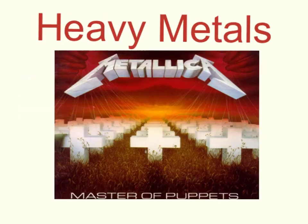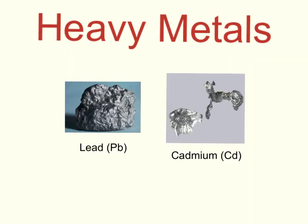Now, heavy metals. We have two examples here: lead and cadmium. These metals are very dangerous if they accumulate in our bodies. The reason why is that these metals act as non-competitive inhibitors of important enzymes in metabolic pathways within cells.